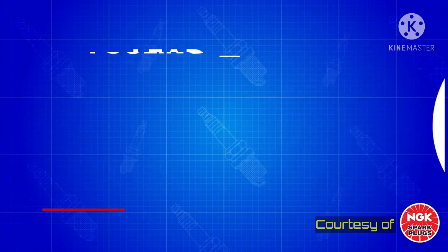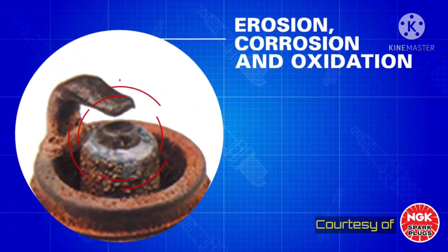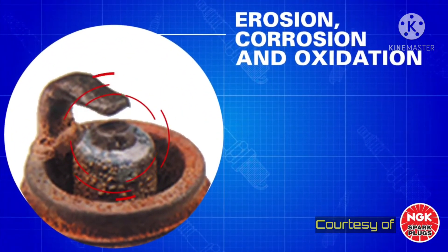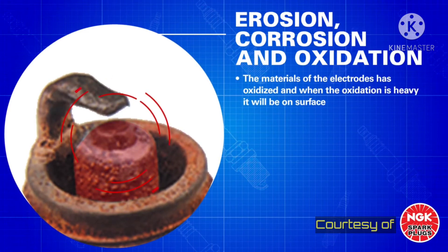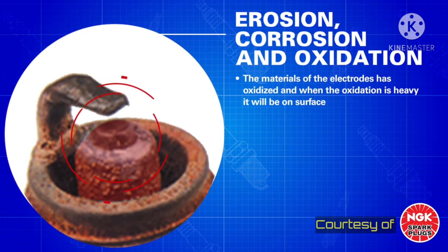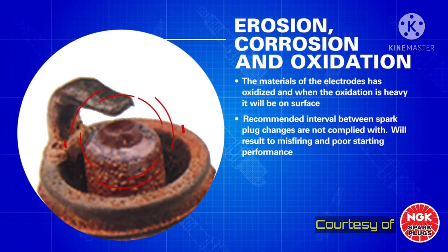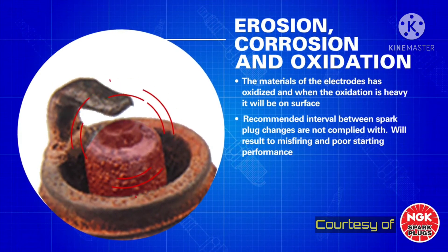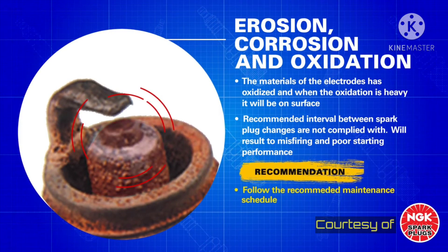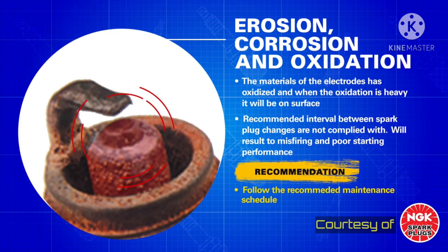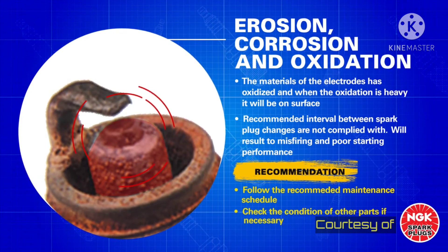Erosion, Corrosion, and Oxidation. The materials of the electrodes have oxidized, and when the oxidation is heavy, it will appear green on the surface. The surface of the electrodes is also fretted and rough, which will result in misfiring and poor starting performance. Follow the recommended replacement interval of spark plugs. Check the condition of other parts and replace if necessary.